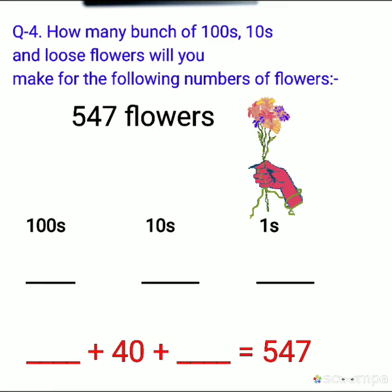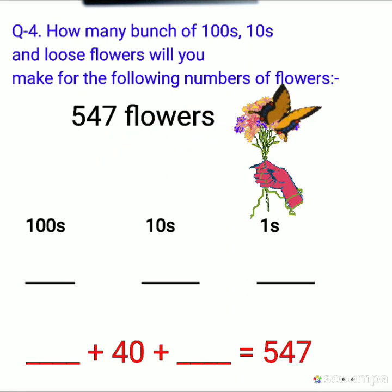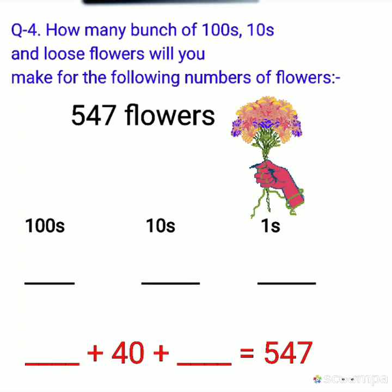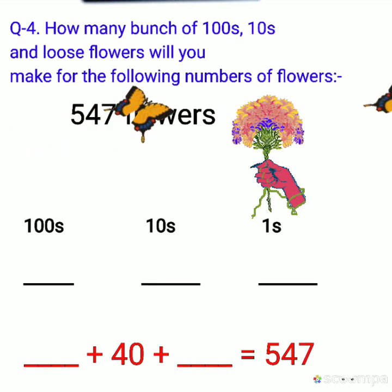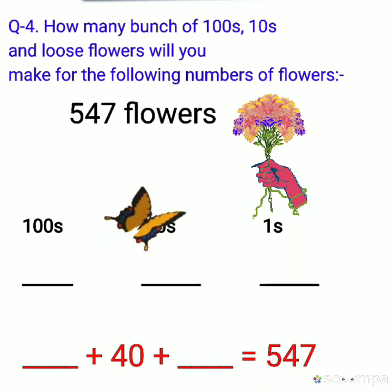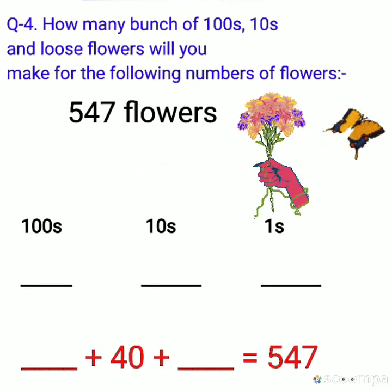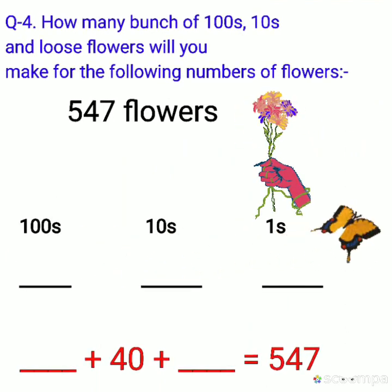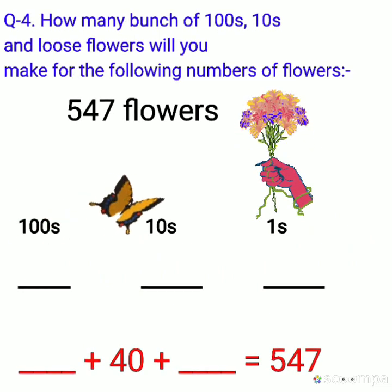Now, question number 4. How many bunches of hundreds, tens, and loose flowers will you make for the following number of flowers? Below, how many flowers are written? 547. You have to make some bunches from this. Make some bunches with hundred flowers. Make some bunches with ten flowers. Write those with hundred flowers in the hundreds place, those with ten flowers under tens, and if less than ten flowers remain, write them under ones.